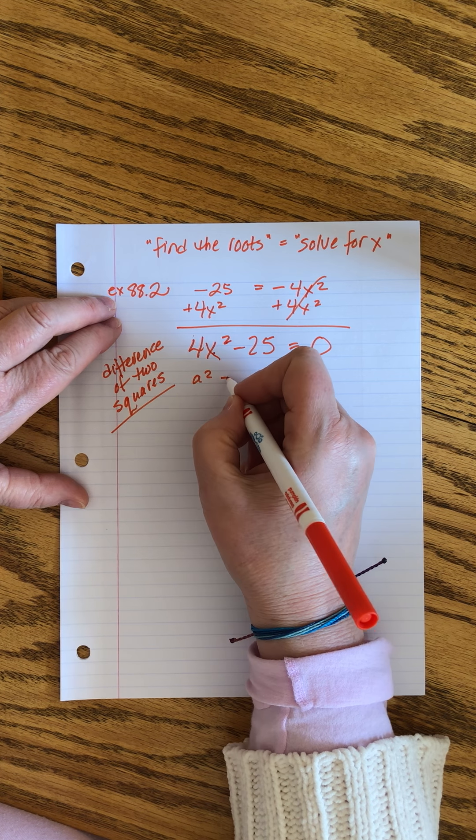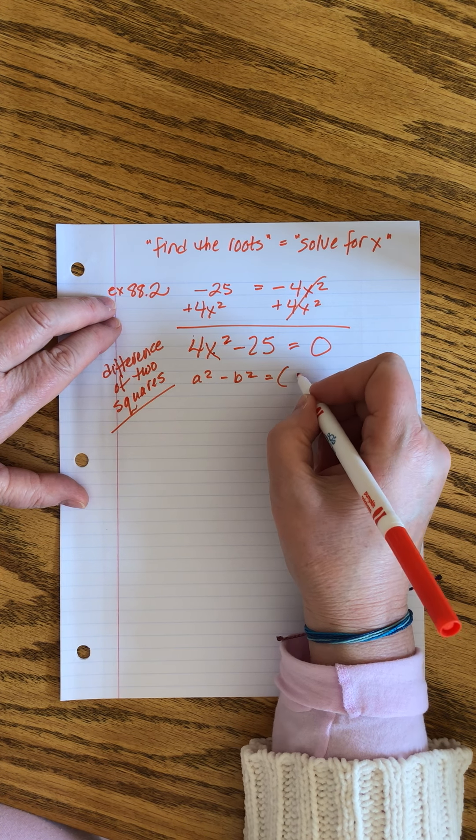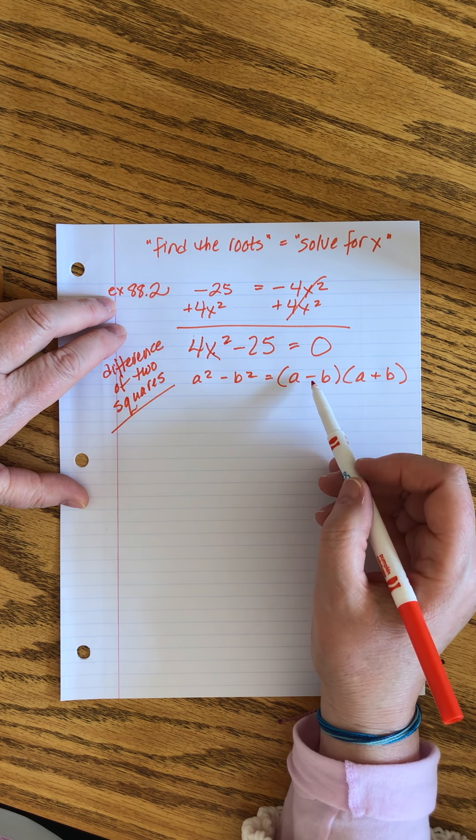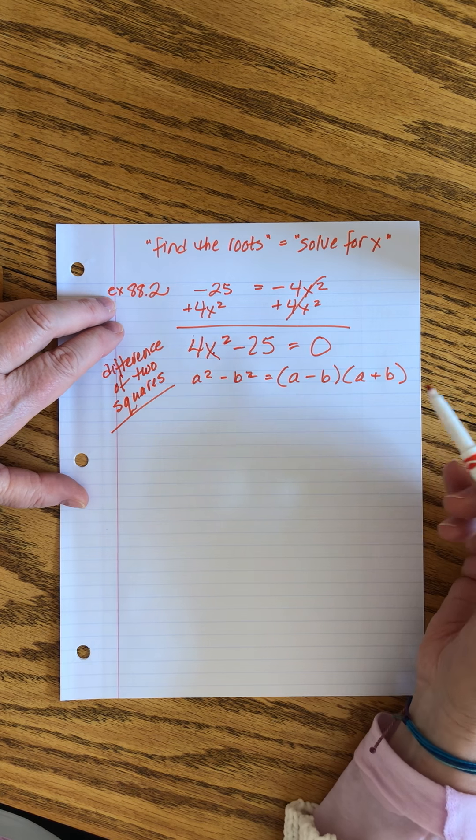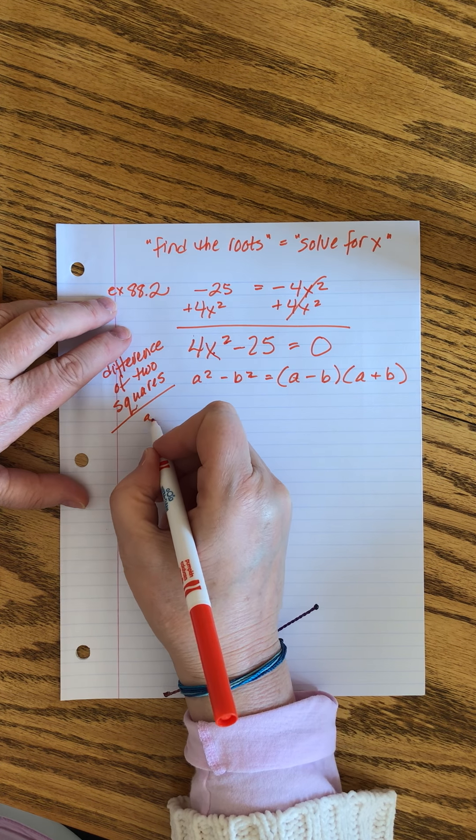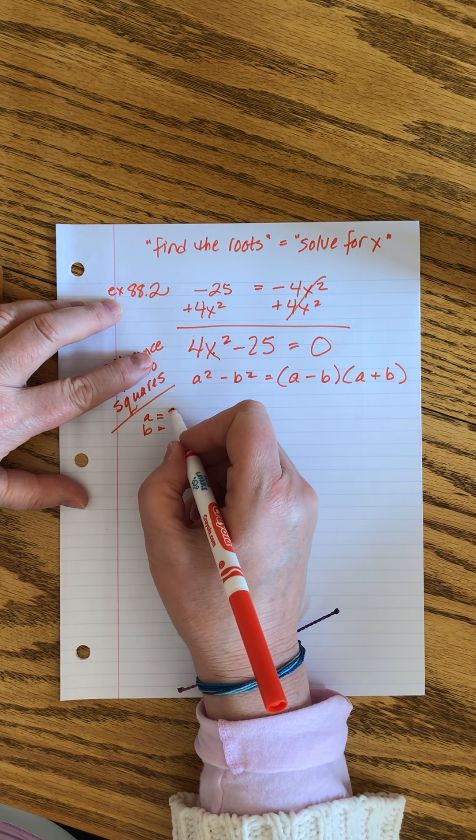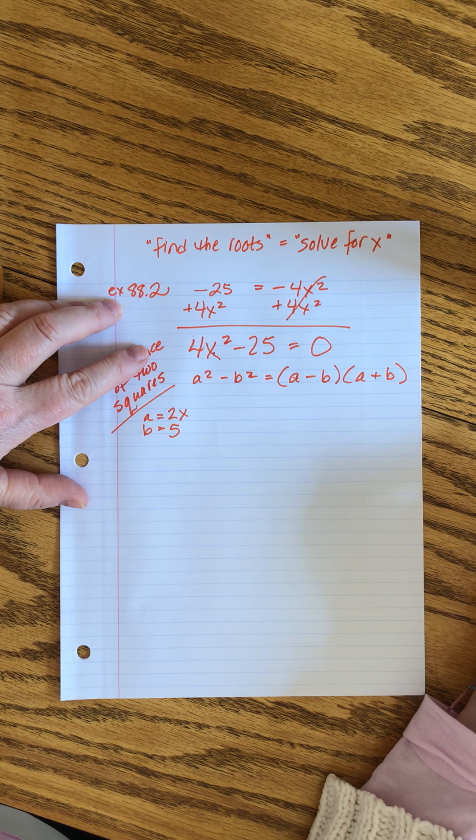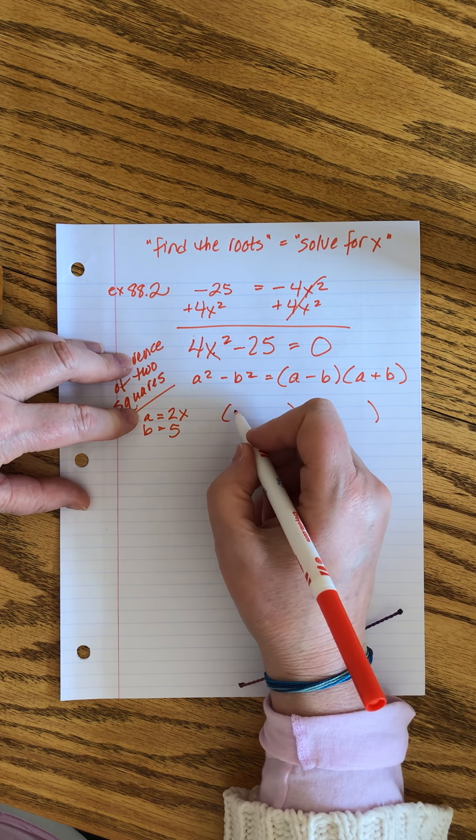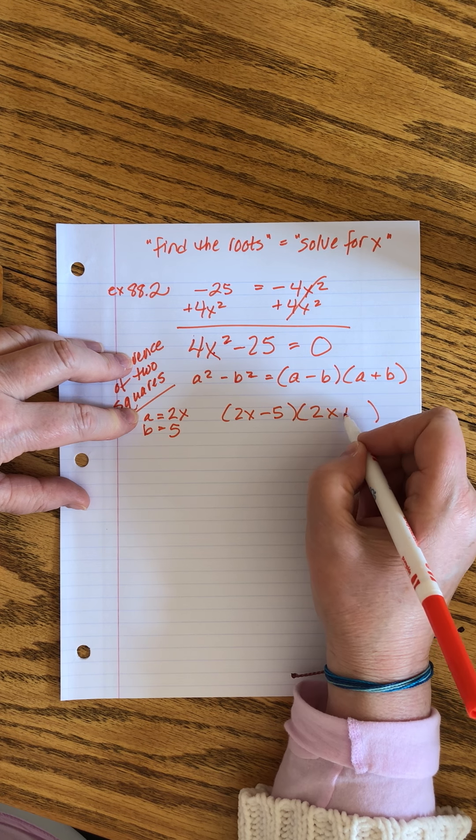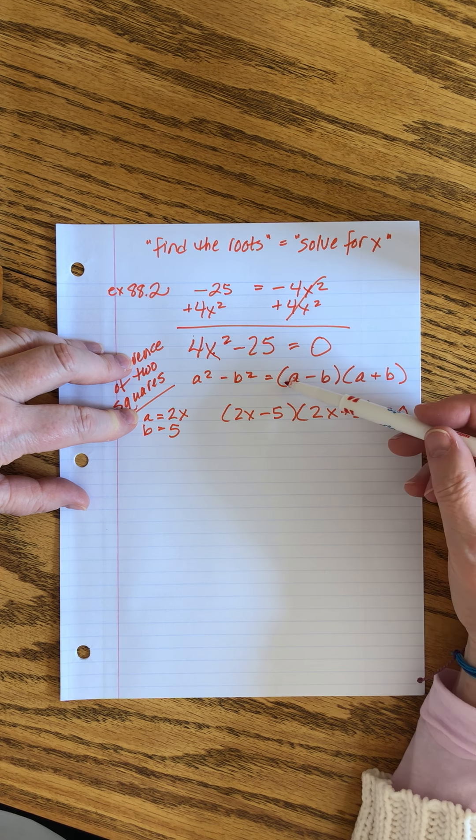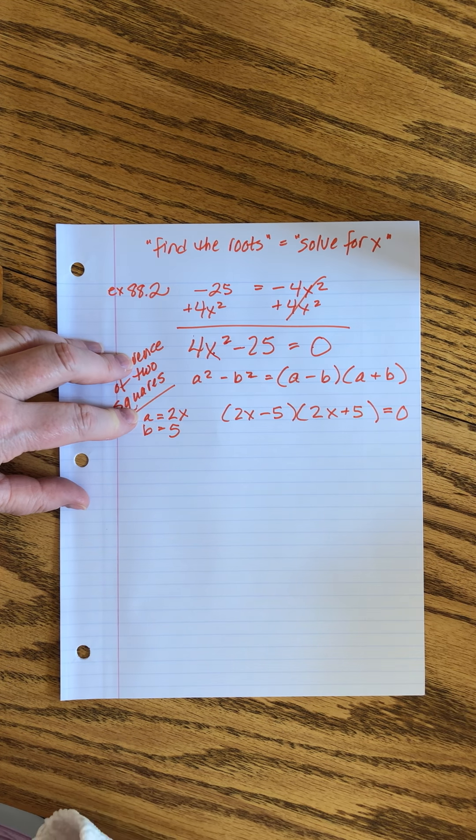This is not a quadratic. This, I recognize the 4 and the 25 as perfect squares. This is a difference of two squares problem. It must be 2x and 5. So now I can use these numbers and this formula to write out my answer. It's going to be 2x minus 5 times 2x plus 5 equals 0.